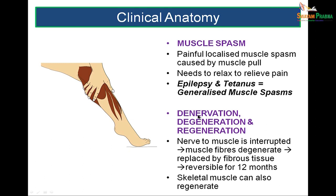Denervation and degeneration: when a nerve to a muscle is severed, injured, or interrupted, the muscle fiber degenerates and gets replaced by fibrous tissue and scar formation. Regeneration is possible if nerve supply is restored within 12 months; beyond that, muscle fiber totally degenerates and it becomes irreversible.